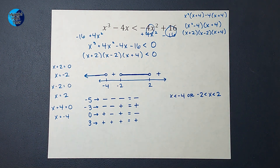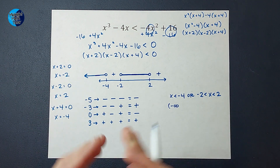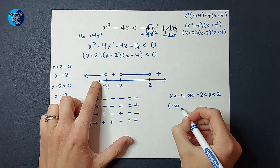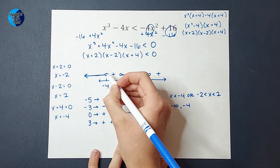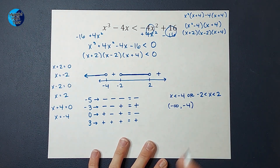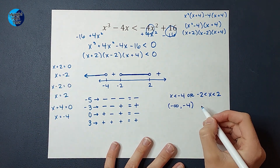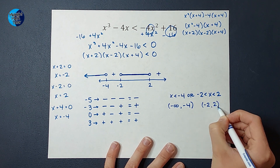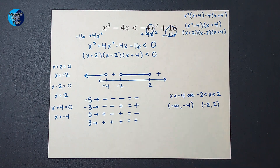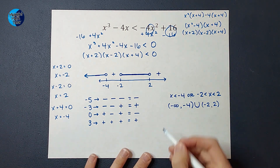In interval notation: any number from negative infinity to negative 4 will work — we use a parenthesis because it can't actually be negative infinity, and a parenthesis at negative 4 because it's an open circle. We union that with the interval from negative 2 to 2, again using parentheses because the endpoints are excluded, and we use a union symbol to show these two intervals together.